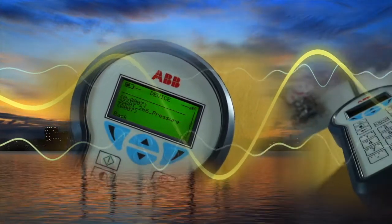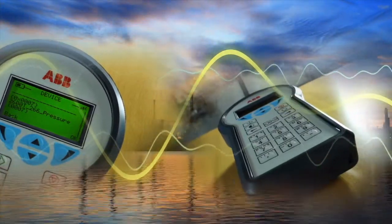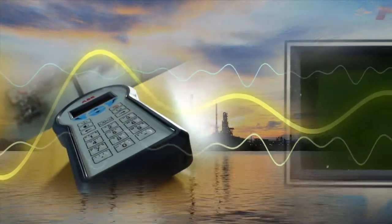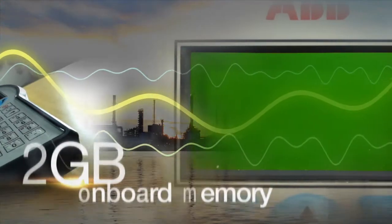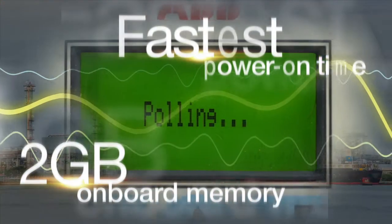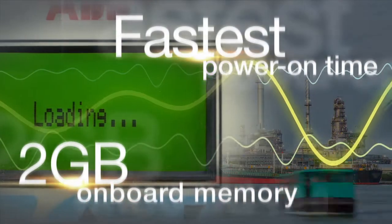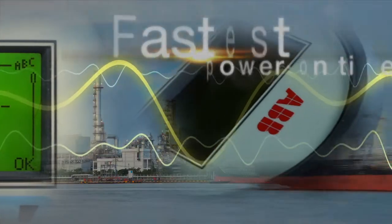ABB's new DHH805 Handheld Configurator takes the hassle out of setting up HART devices in the field. With 2GB memory and the fastest power-on time on the market, the DHH805 is setting new standards for usability.